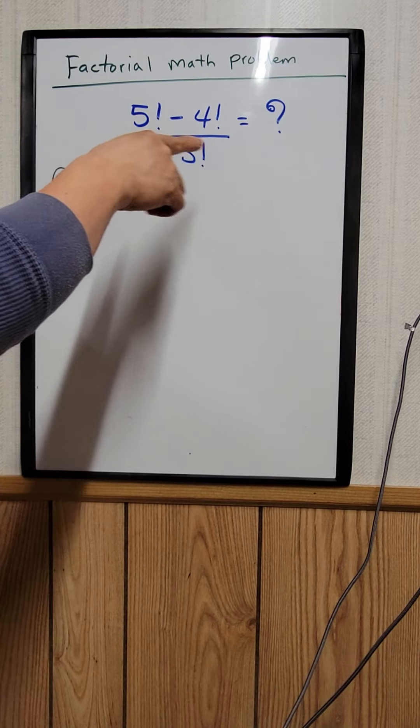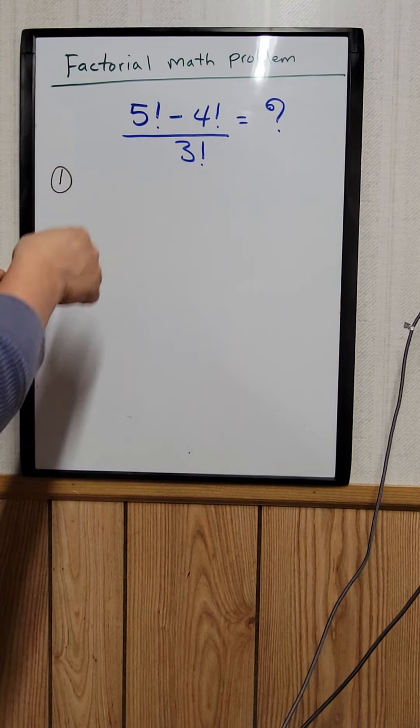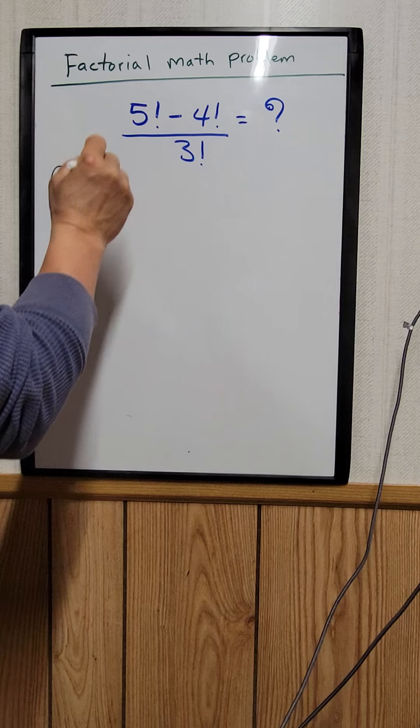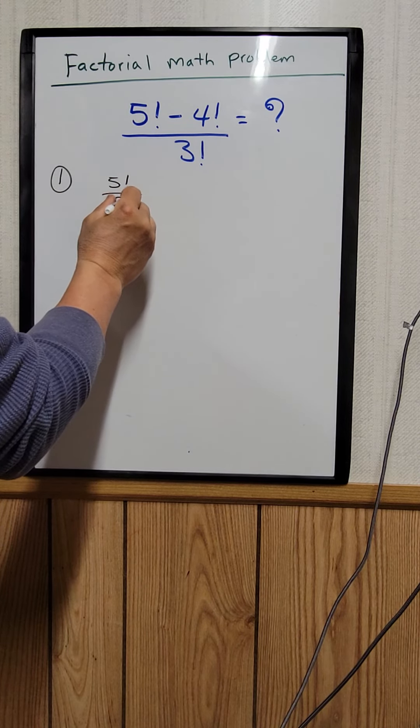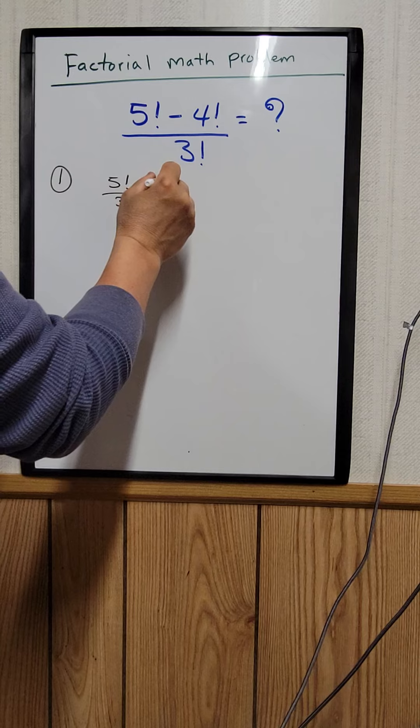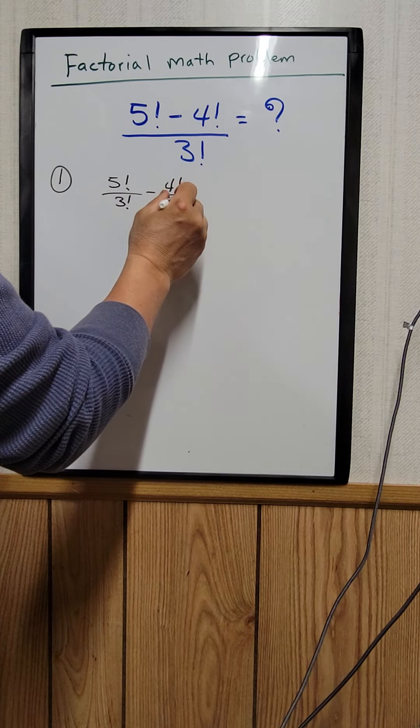Let me show you two different ways how to solve this. This can be written as 5 factorial divided by 3 factorial, minus 4 factorial divided by 3 factorial.